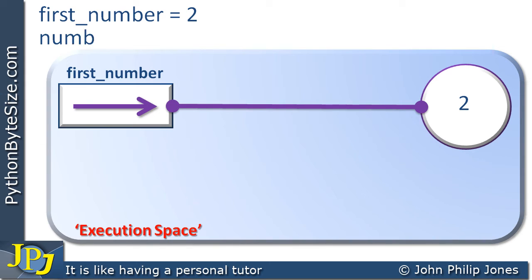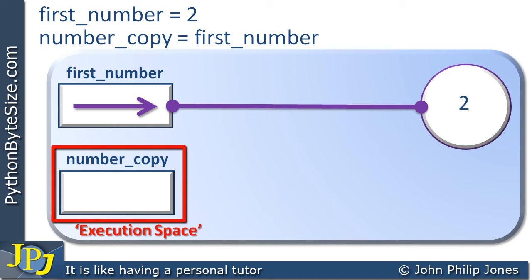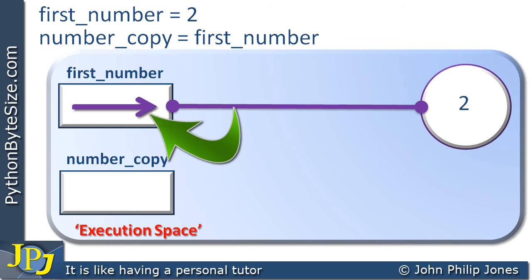Let's consider the next program statement. Number copy is assigned first number. We will get another object reference being created. Now this object reference will receive the address that's stored in the object reference first number as represented by the arrow. And there we can see the arrow being transferred from the object reference first number to the object reference number copy.